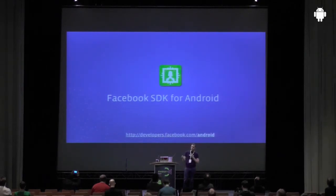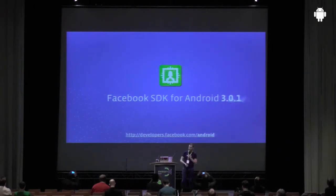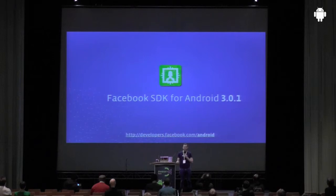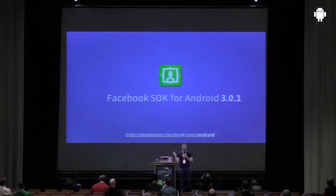That led us to where we are now — the latest version of the Facebook SDK for Android, 3.0.1. That's available at developers.facebook.com/android. If you're an Android developer using SDK version 2, go there now and upgrade. Have a look at the new feature sets. If you're not yet using our SDKs, now's a great time to start.